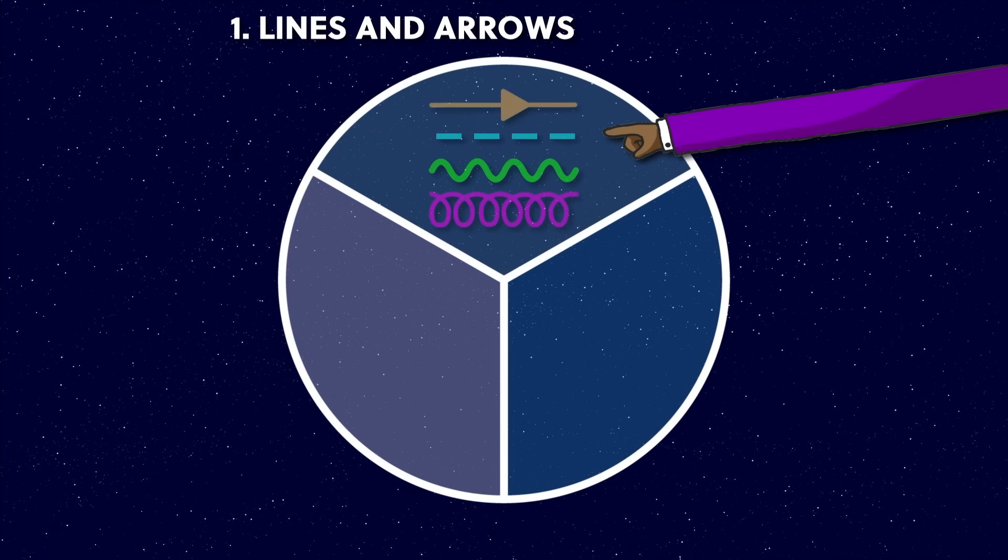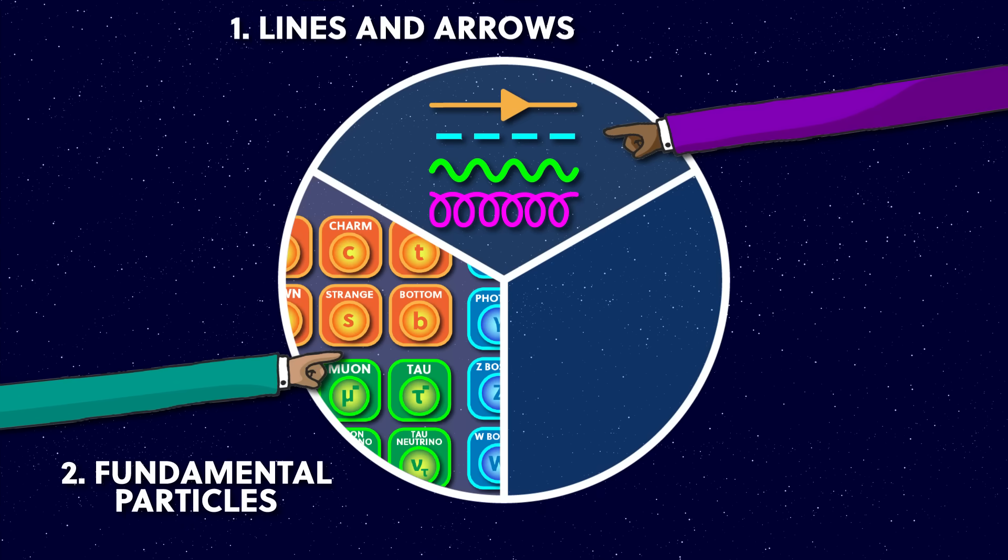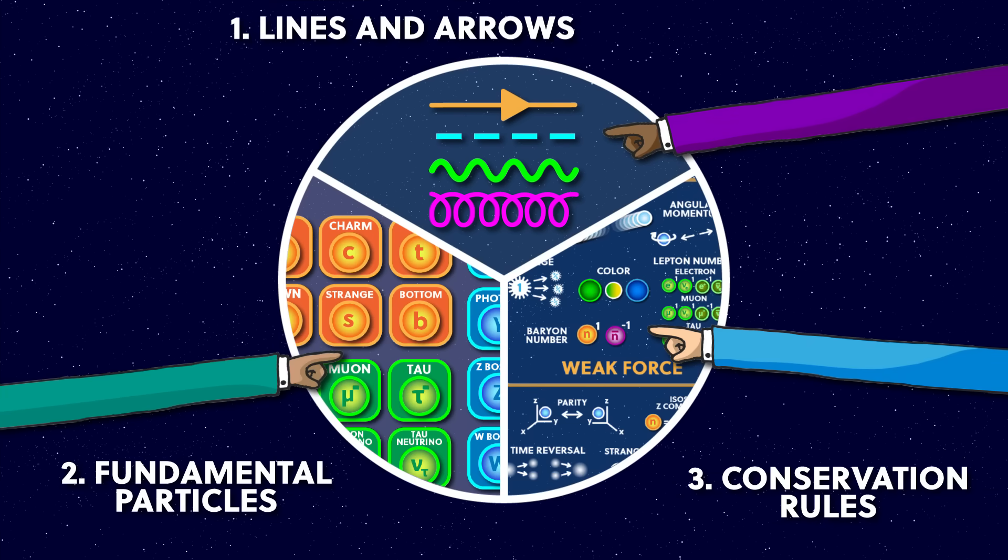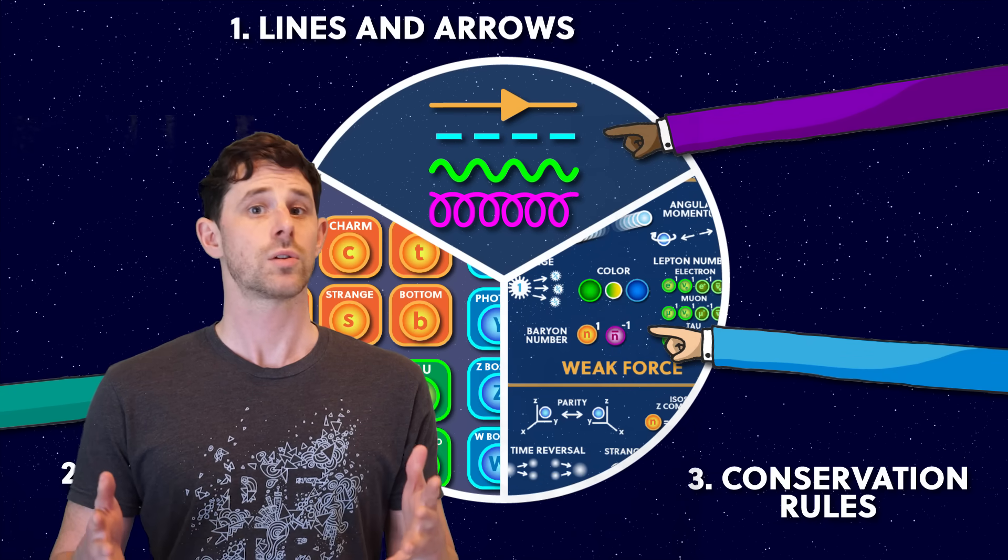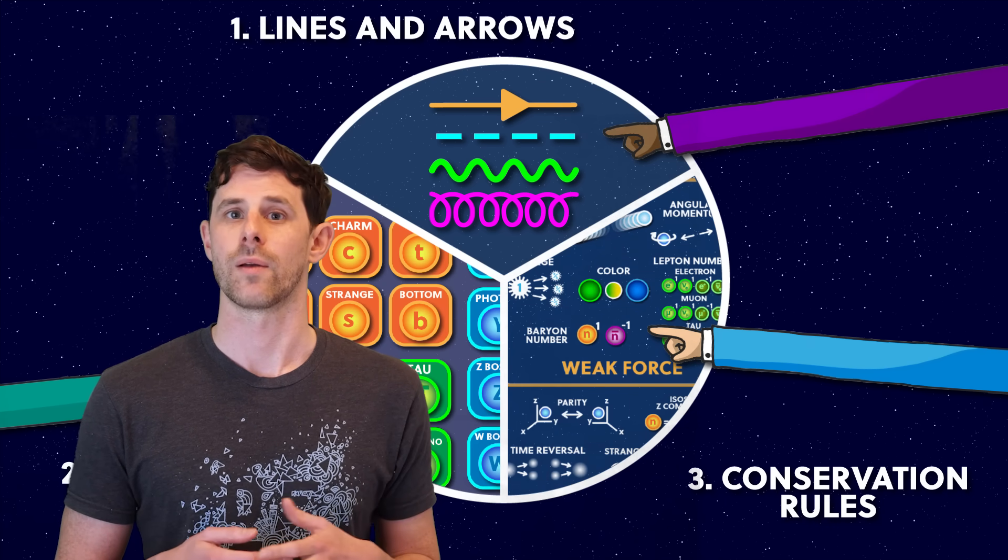What all the lines and arrows mean. What all the particles in the standard model are, as well as their special properties like charge and spin. What the overall rules are. These are called conservation rules. But you could call them in-out rules, as in you can't get out a different amount than what you put in.